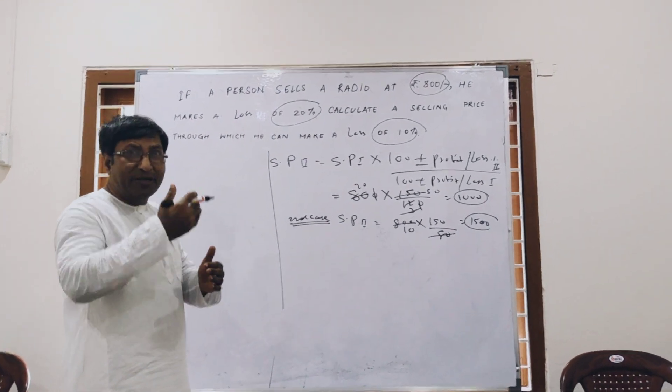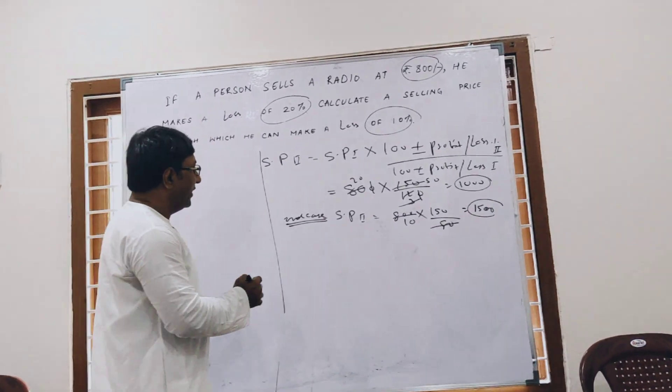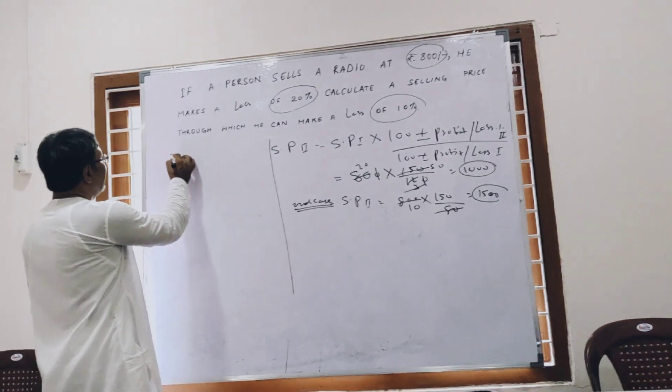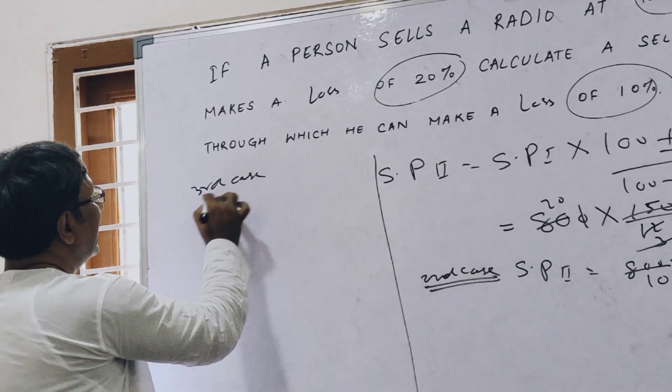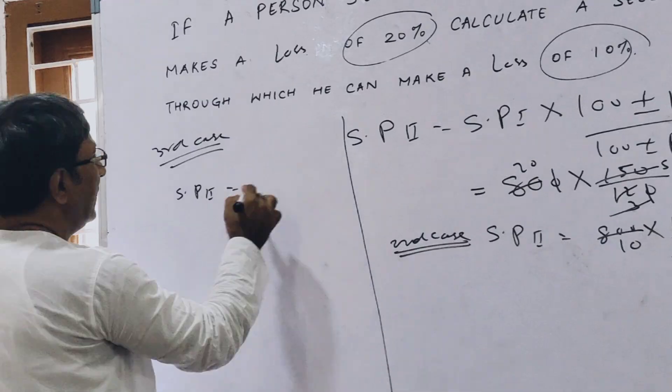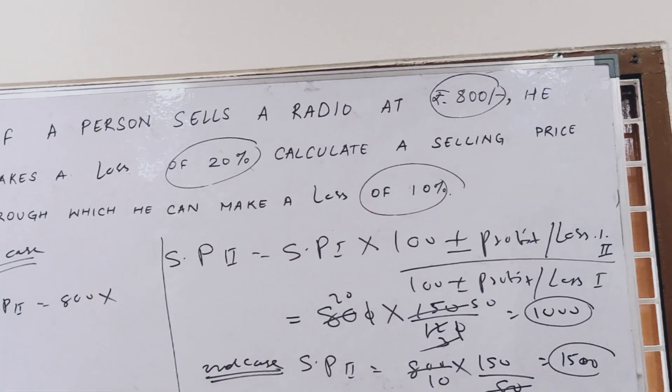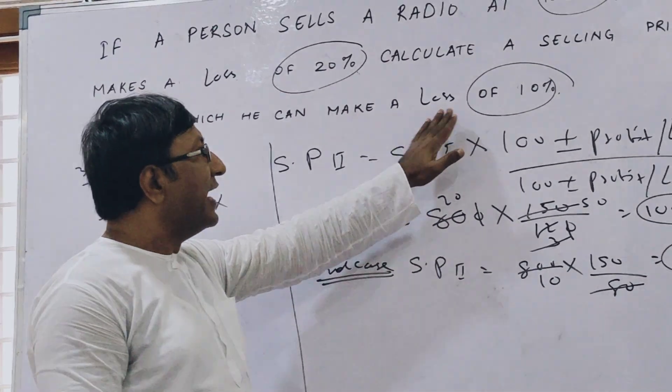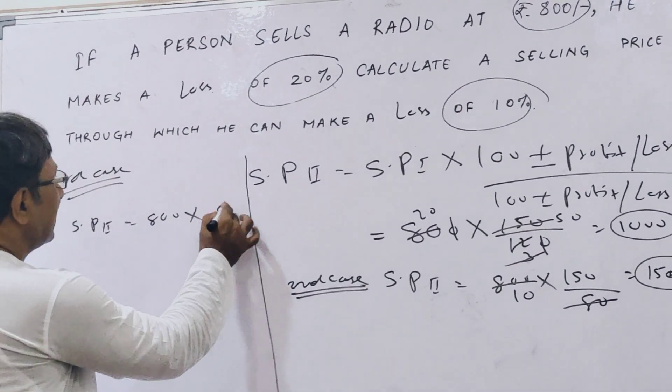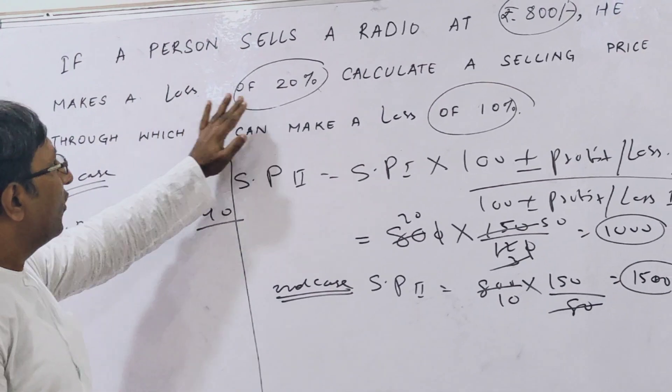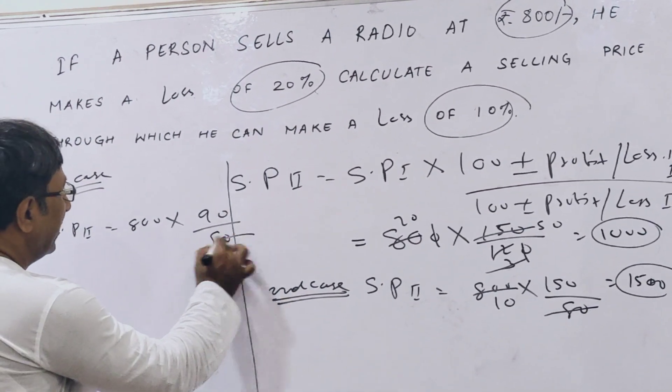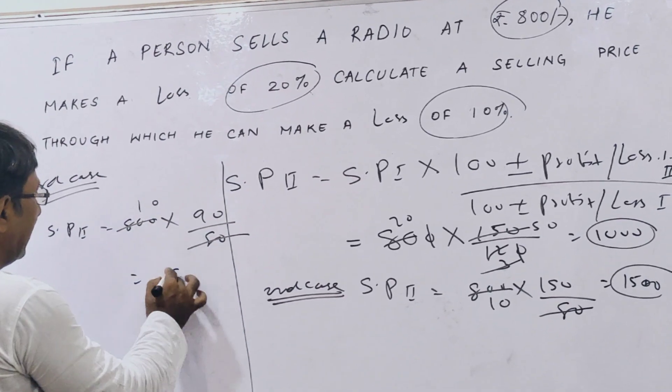What we need? We need to reduce our loss percent. In the third case, selling price second equals selling price first which is 800. What you want? You want to minimize the loss to 10%, so 100 minus 10 that is 90. And what was there? Loss of 20%, so 100 minus 20 is 80. So 800 into 90 by 80 that is 900.